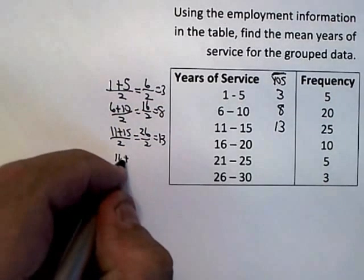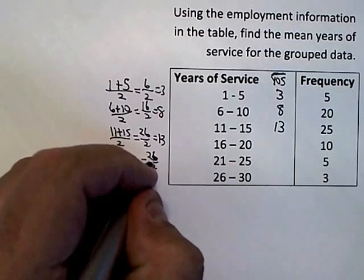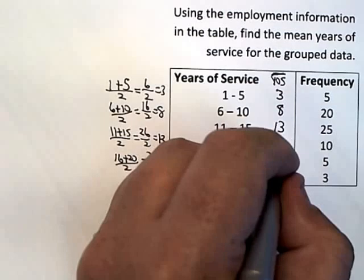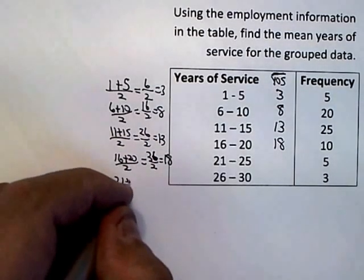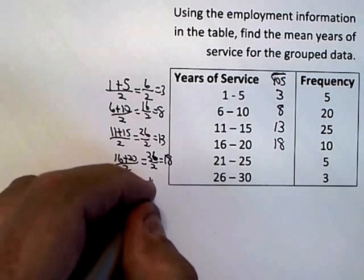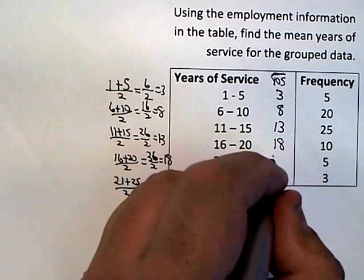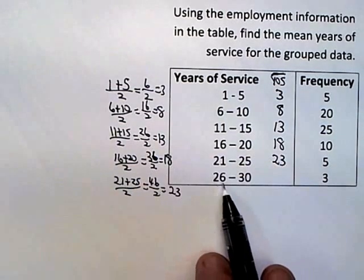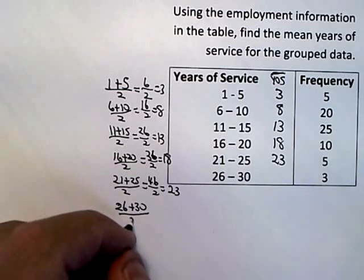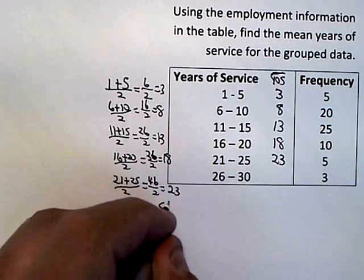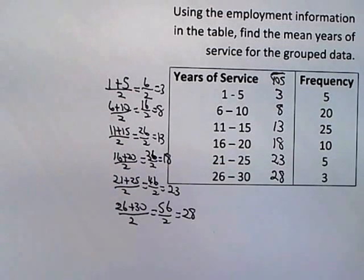Then I do the same thing for sixteen and twenty: add them up, divide by two — that's 36 halves, which is eighteen. So I assume they all had eighteen years of service. Then I take twenty-one and twenty-five and average them — that's 46 halves, which is twenty-three — so I assume all five of those people had twenty-three years of service. And last but not least, twenty-six and thirty averaged gives me 56 divided by 2 is twenty-eight, so I assume all three of those people had twenty-eight years of service.